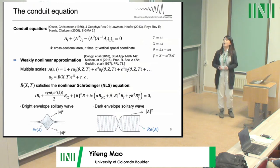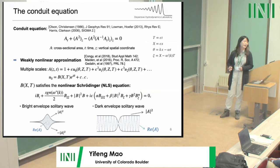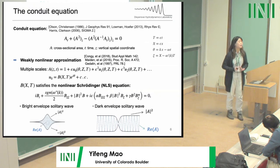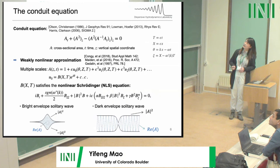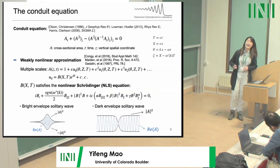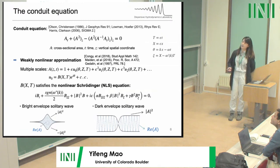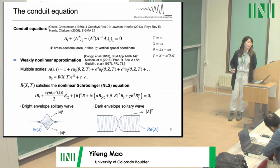This physical system can be well modeled by the so-called conduit equation, where A is the cross-sectional area, T is time, and z is the vertical spatial coordinate. It is a strongly nonlinear and non-integrable equation. In the weakly nonlinear regime, we use the multiple scales method, introducing slow variables X and T, a small amplitude parameter epsilon, and a fast variable theta. We obtain the leading-order behavior as an envelope B(X,T) multiplied by a harmonic term plus its complex conjugate, where B satisfies the nonlinear Schrödinger equation with higher-order terms.